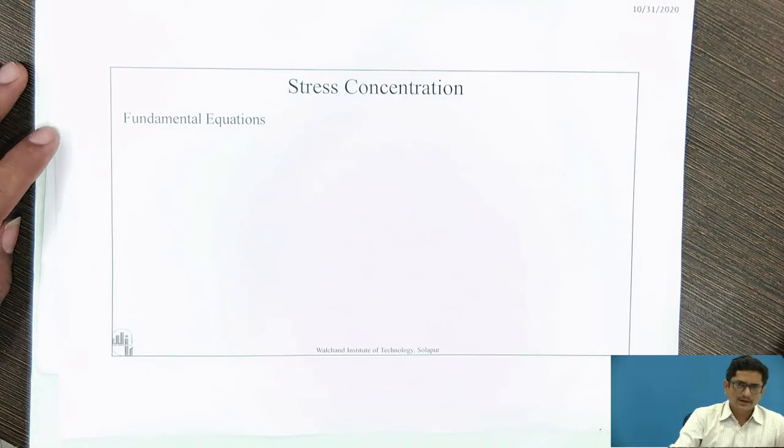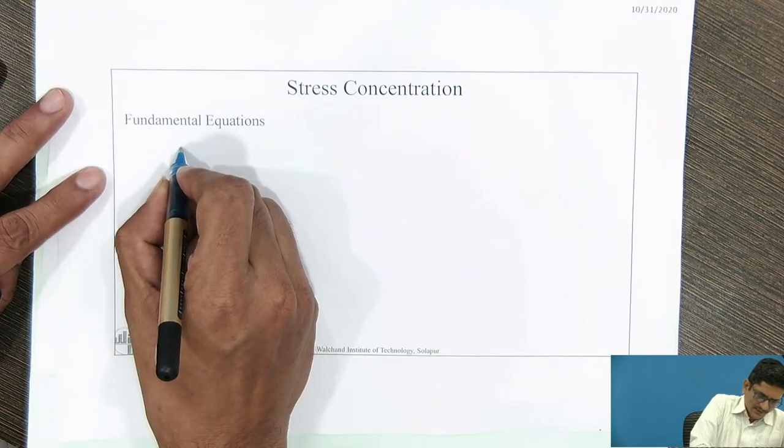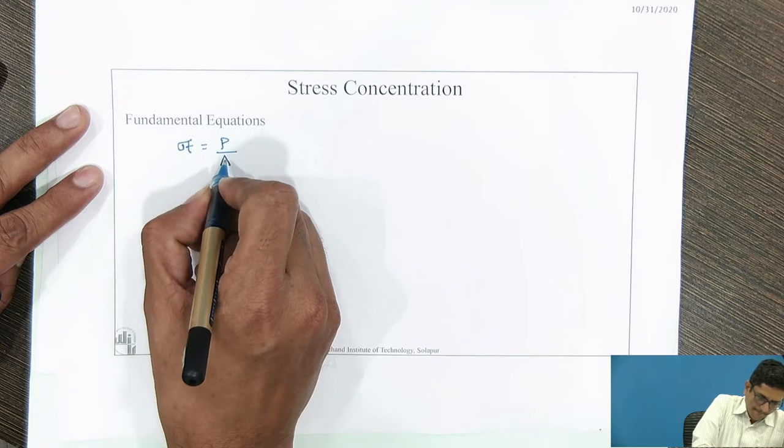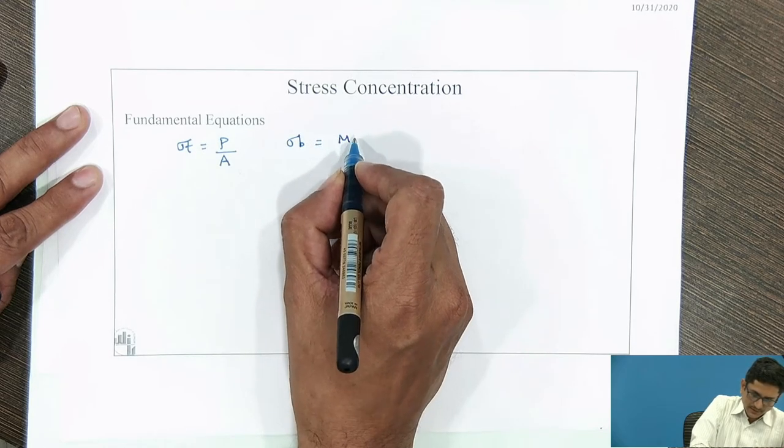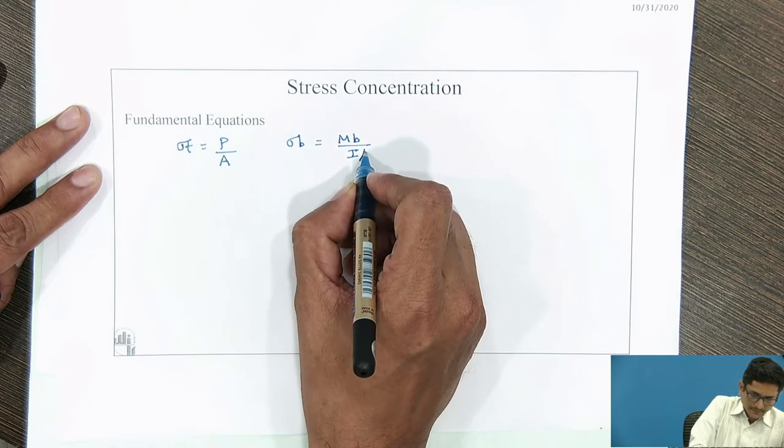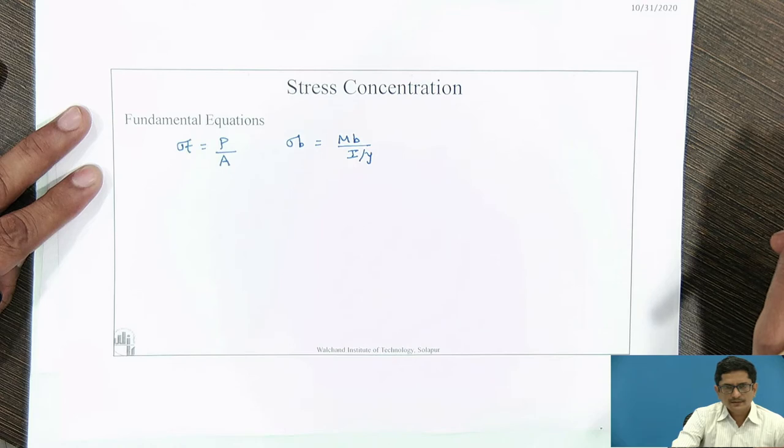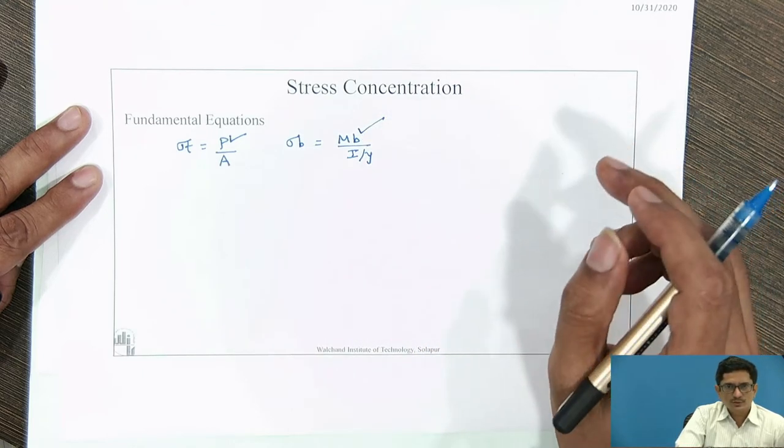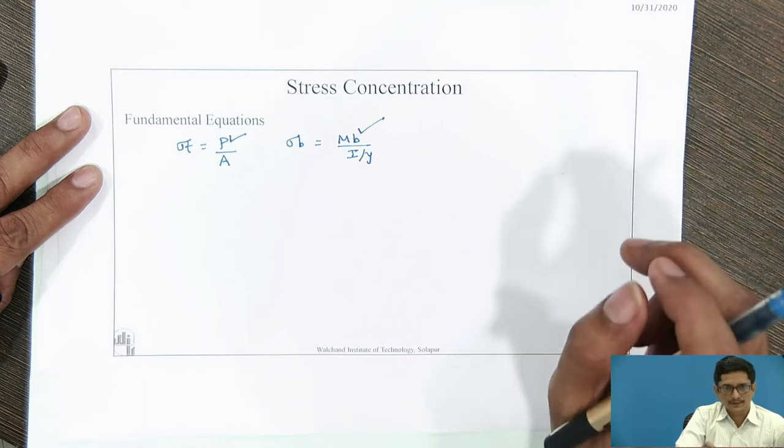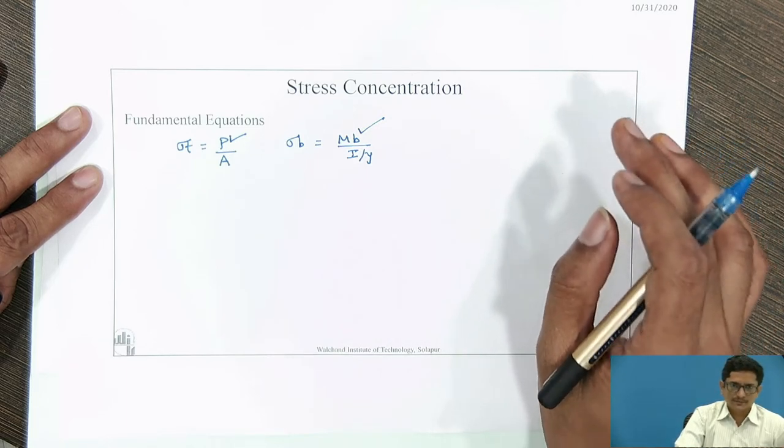We have seen that there are some fundamental equations. The basic equation is sigma_t equals P by A. Then sigma_b equals bending moment divided by the section modulus. Here in this case, we are dealing with static load. However, if the load is going to change with respect to time, if there is a variation in the load magnitude, then we need to discuss something.